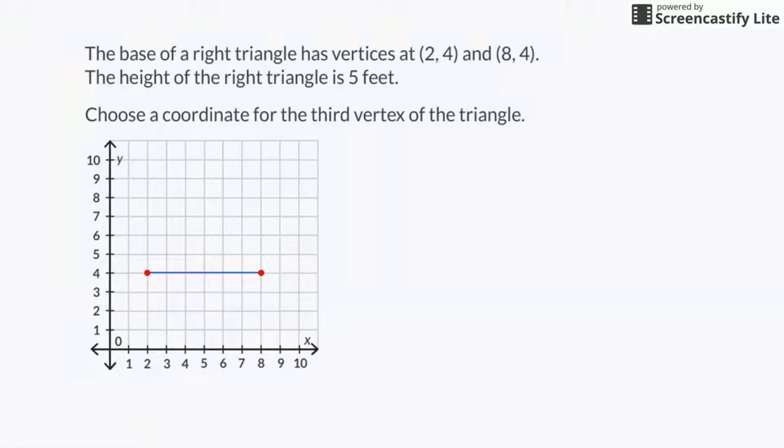I need to find a third coordinate for the right triangle. I know that a right triangle has one right angle. Using a grid makes this easy because the vertical lines are perpendicular to the horizontal lines, as in a right triangle.